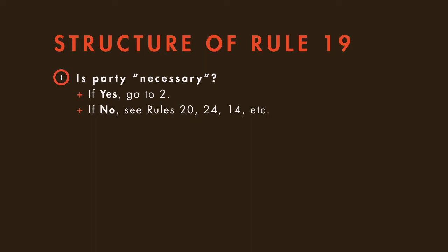or whether the party might be impleaded under Rule 14. Point 2 asks whether joinder of that party to the case is feasible. If the answer is yes, then the party must be joined.